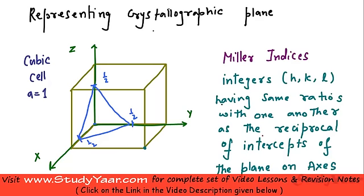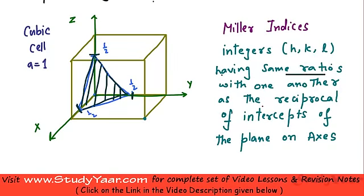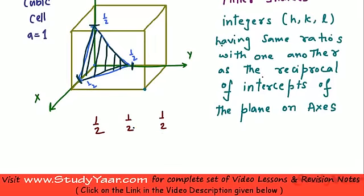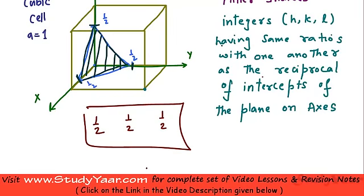So over here what you have is the intercept of this particular plane, let me just shade it. The intercept of this particular plane on x-axis is half, right? On y-axis is half, on z-axis is half. Now, Miller indices are integers which have same ratio with one another as the reciprocal of intercepts. My intercepts are half, half, half.